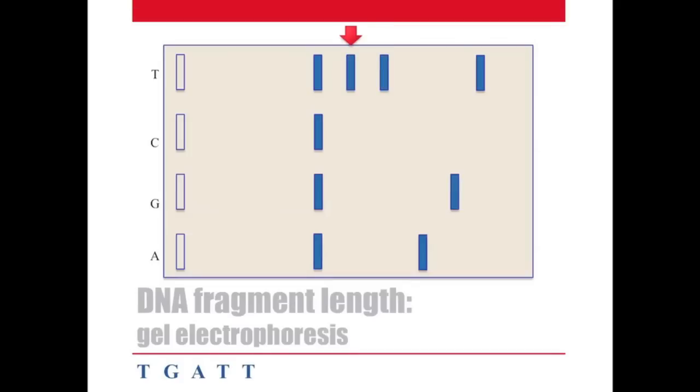This gives us a sequence of T, G, A, T, T. What about our last position, though? The position occupied in all the lanes?